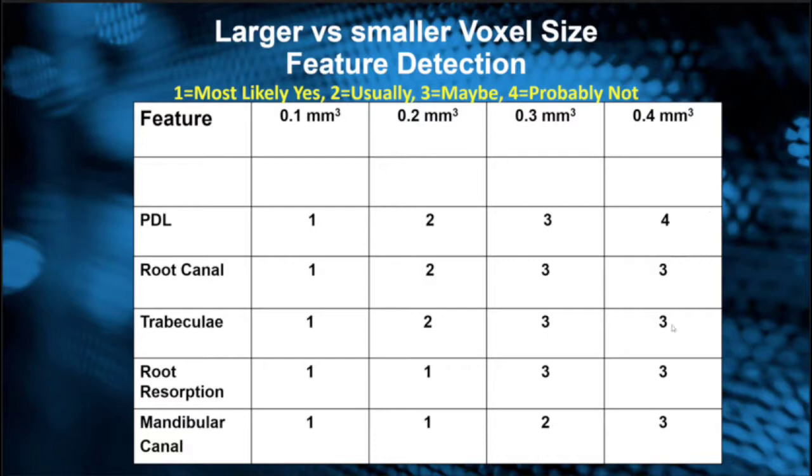If we're looking at the mandibular canal, a 0.3 voxel scan may give us a better view than a 0.4 voxel scan. Usually we can see that if it's a 0.2 voxel scan. Now this is not a scientific outline whatsoever; this is just a general view to help us understand certain features that we want to detect.